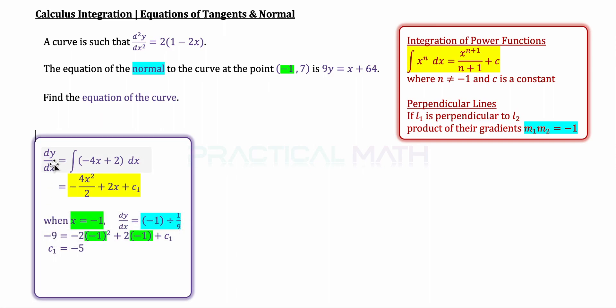Replacing your dy/dx to be -9 like this, as well as your x to be -1 inside, we can find for our c₁, which essentially is -5. So, over here, let's rewrite our dy/dx. dy/dx is given to be -2x² + 2x - 5.